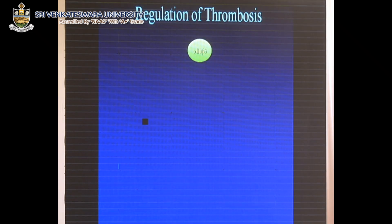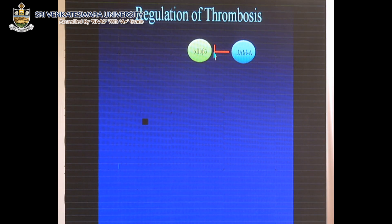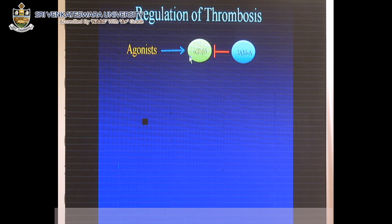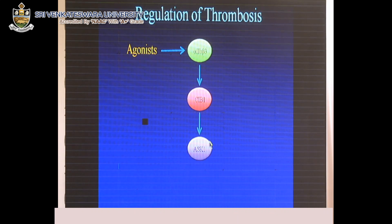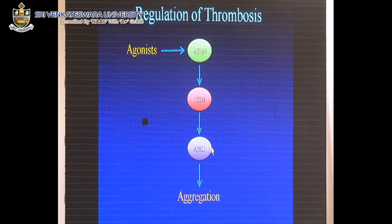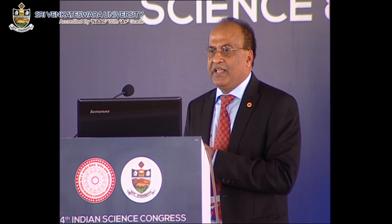In summary: integrin alpha 2b beta 3 is the major receptor for thrombus formation. It is kept inactive by JAM-A. When an agonist is present, JAM-A is lost, the integrin activates, CIB1 is activated, which then activates ASK1, leading to platelet aggregation. Now that we know all these players in the pathway, we can generate inhibitors of each to block thrombosis.